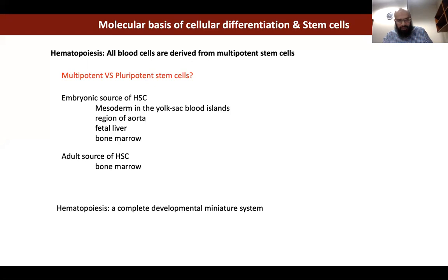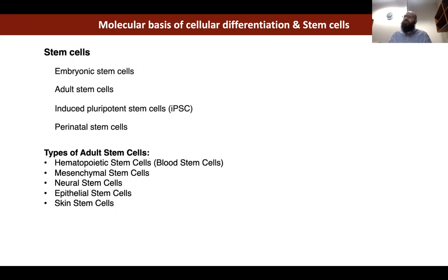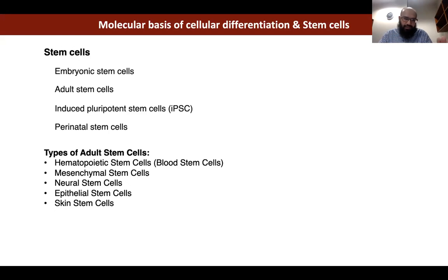We finished up around this point when we were discussing stem cells. I told you about different classes: embryonic stem cells, adult stem cells, induced pluripotent, and perinatal stem cells, and the different advantages and disadvantages of using these for mainly therapeutic purposes. There are some ethical issues we'll consider in the later part of the talk.